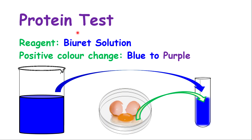The next test is the protein test. Protein is a very important substance to our body — it helps to repair cells and to build cells, and protein contains amino acids. To test for proteins, we use what we call the Biuret solution. The Biuret solution is blue in color, and if the food contains protein, it moves from blue to purple.